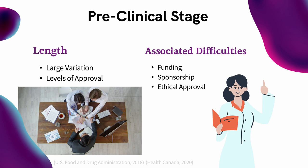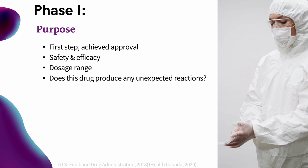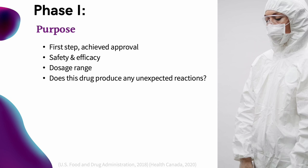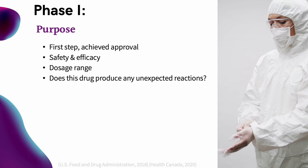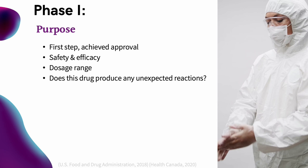Now on to Phase 1, which is the first official step of a clinical trial. Moving on to this phase implies that the trial has been approved by Health Canada and funding has been acquired. This phase must be monitored by the Research Ethics Board as humans are now involved. Similar to the preclinical stage, the purpose of this phase is safety and efficacy, but more specifically to determine an appropriate dosage range and identify unexpected reactions to the drug.